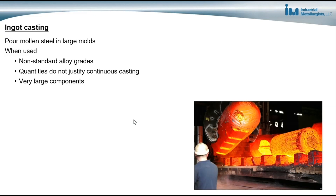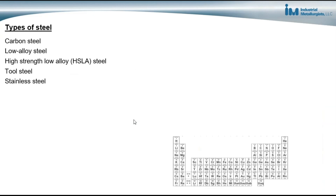Ingot casting is also used for producing very large components. There are five general families of steels: carbon, low alloy steel, high strength low alloy steel, tool steel, and stainless steel. The particular type of steel depends on the composition, the carbon content, and the different alloying elements that are added. Within each different category of steel there are also several different classes of steel based upon the alloy composition and the microstructure developed in the steel due to heat treating and other processing.